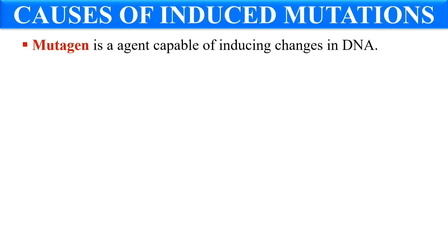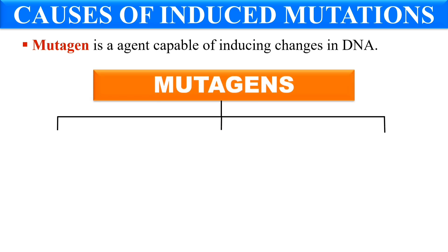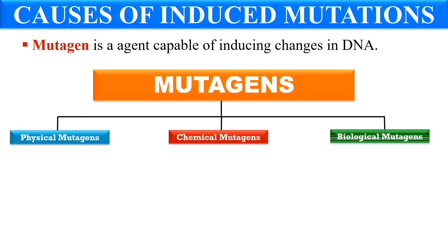Mutation is caused by some external factor known as the mutagen. Mutagens are an agent that is capable of inducing changes in the DNA. Mutagens can be of three types: physical mutagens, chemical mutagens, and biological mutagens.